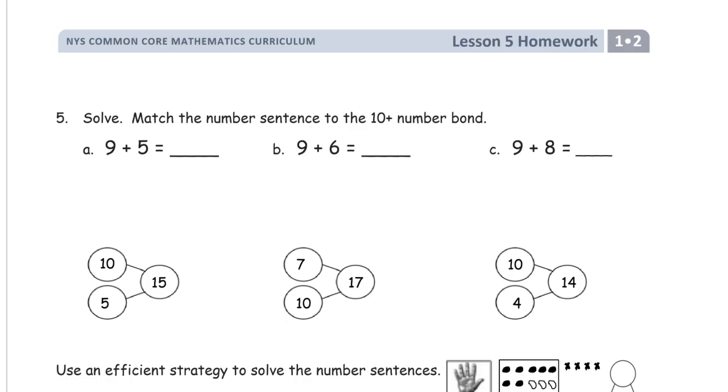And here's our next page. Solve, match the number sentence to the 10 plus number bond. So here's 9 plus 5. That's a 10, 10, 4. Boom. 9 plus 6, that's a 10, 5. There we go. 9 plus 8, that's a 10, 7. Right? Because I think this is one more, and this is one less. So you can see here, that's 17, this is 15, and that's 14.